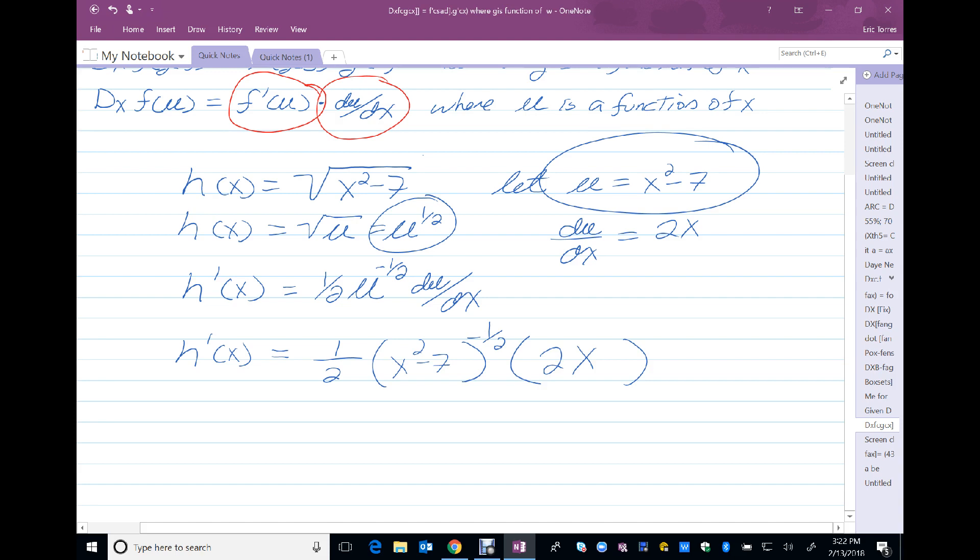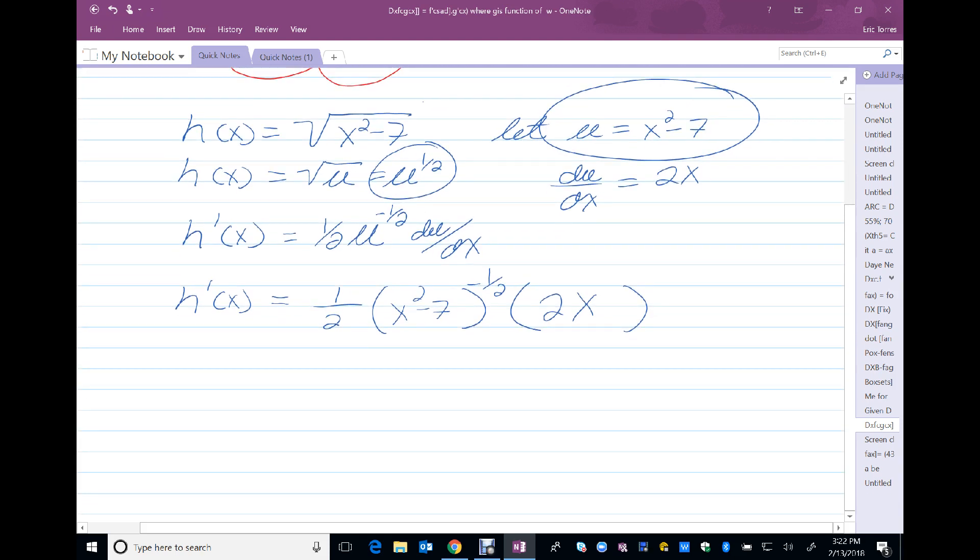And again, this can be cleaned up a little bit more. So, I've got a fraction. This first part puts a 2 in the denominator. This second factor is going to give me a square root of x squared minus 7 in the denominator, because it's the negative exponent. And my third component, 2x, will be in the numerator.